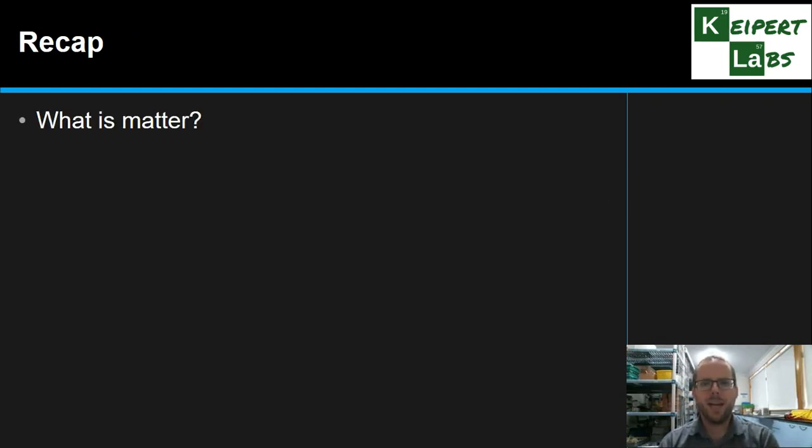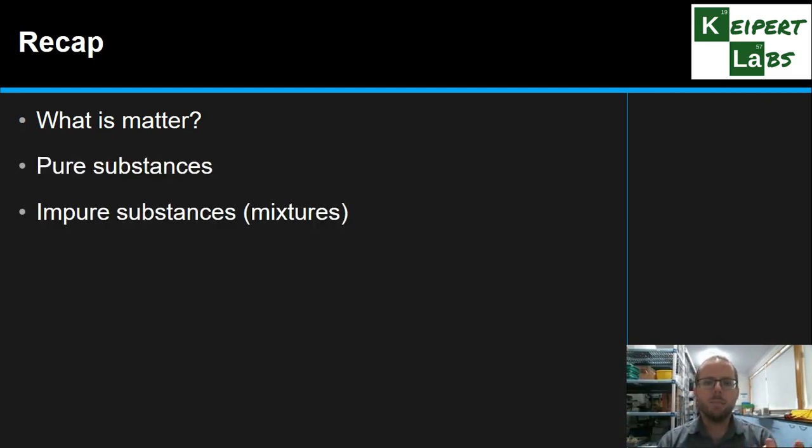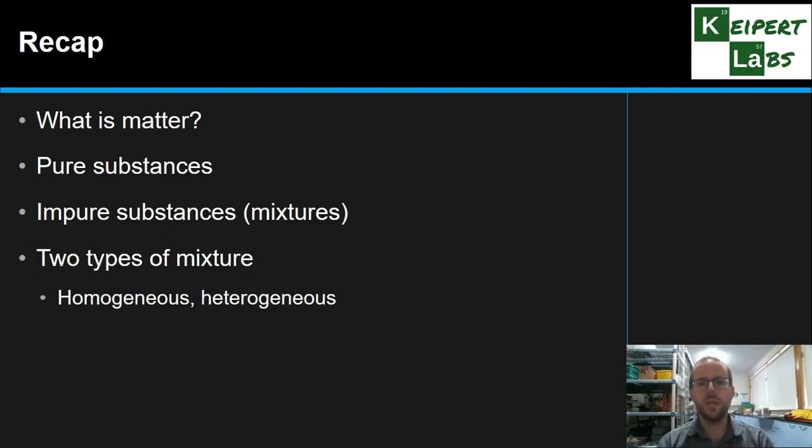So we've recapped what we mean by matter, all the things you can touch. They're made up of really tiny particles that can arrange in different ways. That we can get pure and impure substances, depending on how many types of particles we have. And how they're mixed, or how evenly they're mixed, helps us to group mixtures into these two categories of homogenous and heterogeneous. And then seeing how we can take matter and we can classify or group it into categories. Thanks very much for watching. Bye for now.